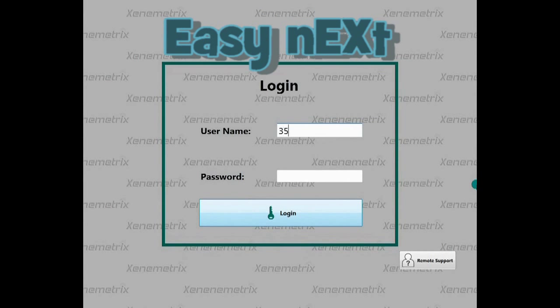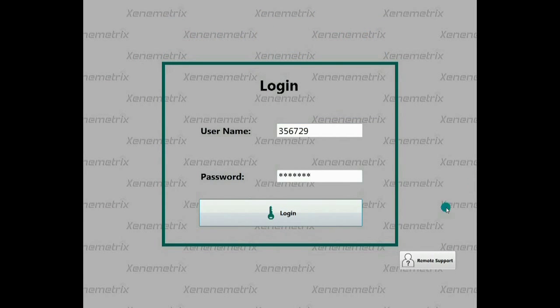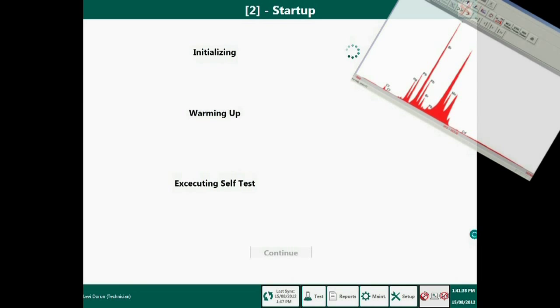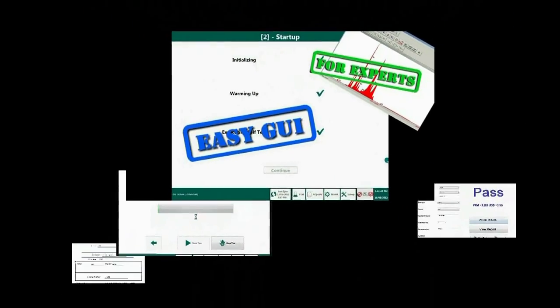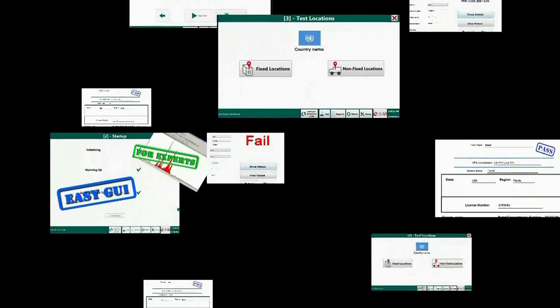Easy Next is state-of-the-art, unique, and new software supporting the excellent Xenometrics Next package for elemental analysis. The Easy Next enables a simple-to-operate graphic user interface for non-skilled operators, from simple to very complicated analytical applications.